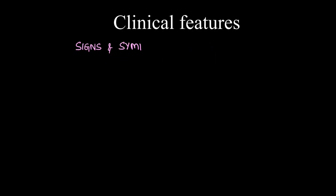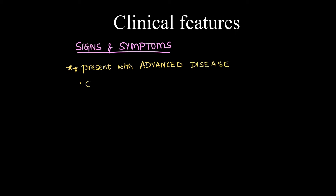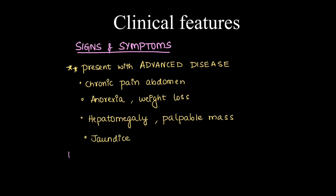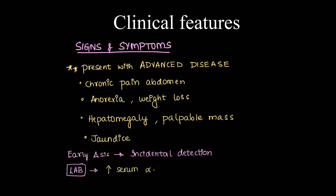Signs and symptoms of gallbladder carcinoma: patients are more prone to present with advanced disease and early presentation is very rare. They present with chronic abdominal pain, anorexia, weight loss like any other carcinoma. Hepatomegaly and palpable mass can be present, and they may present with jaundice. Early diagnosis is usually incidental. Serum alpha-fetoprotein and CEA can be raised.